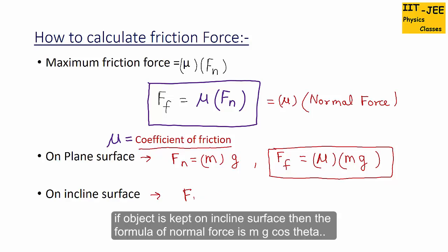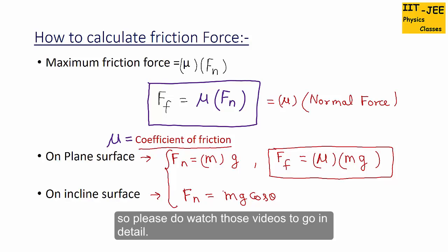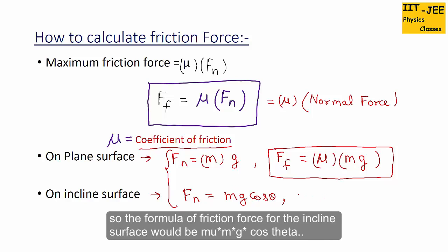If the object is kept on an incline surface, the normal force formula is MG cosθ — we have already discussed these two normal force formulas in parts 2 and 3, so please watch those videos for detail. The formula for friction force on an incline is: FF = μ × M × G × cosθ.